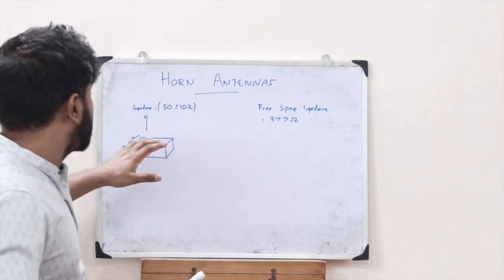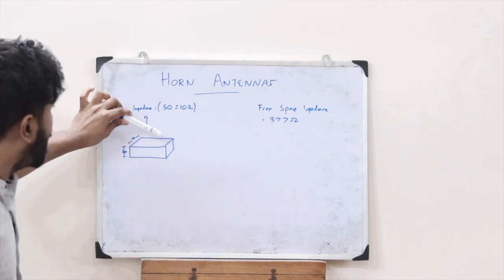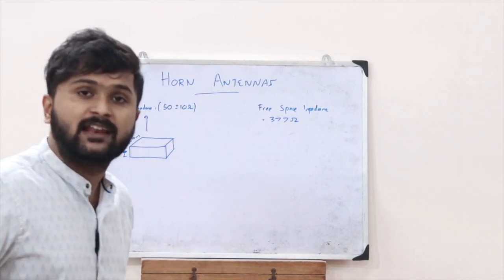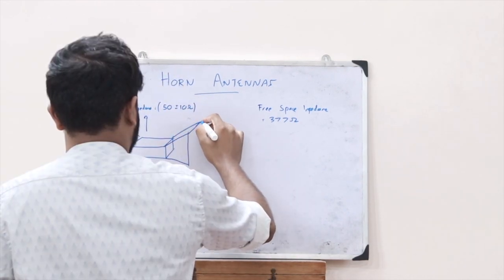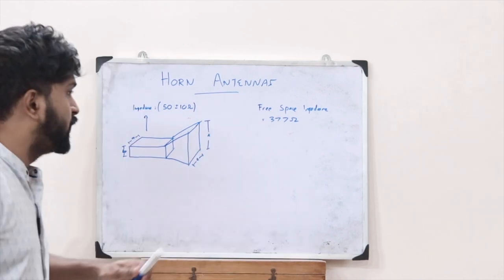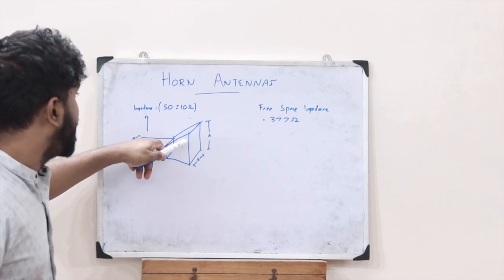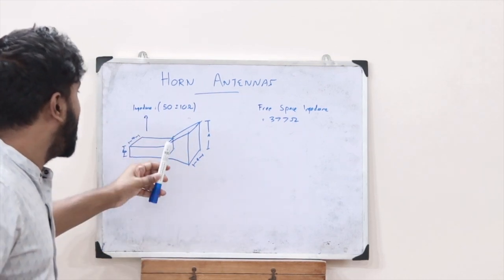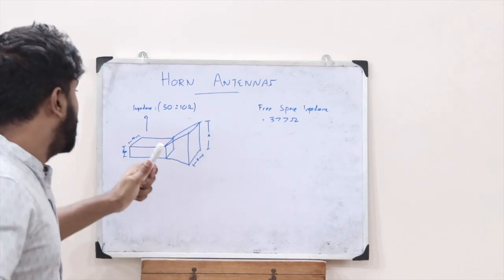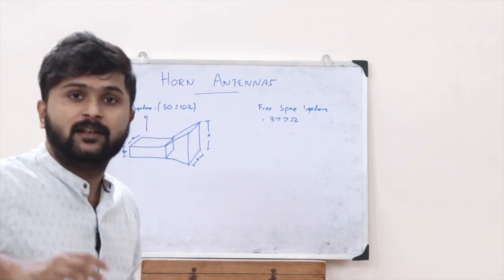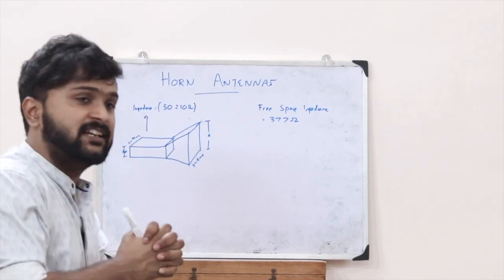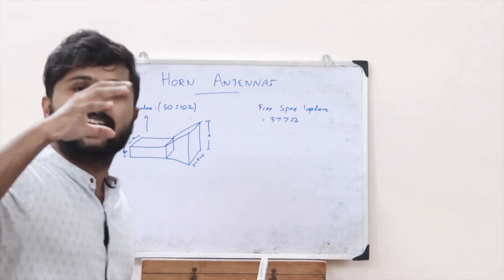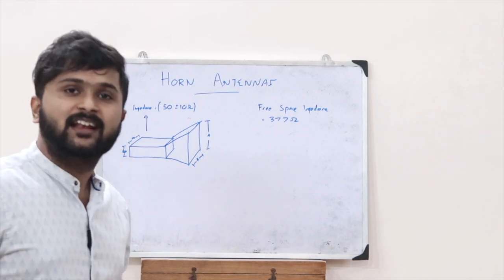For the purpose of radiating this signal, we have to provide a particular flaring at the end of this waveguide. When we provide this flaring, the impedance gets matched between the waveguide and the free space. Thus this flaring element is responsible for impedance matching between the waveguide and free space, resulting in the propagation or radiation of the signal present inside the waveguide.